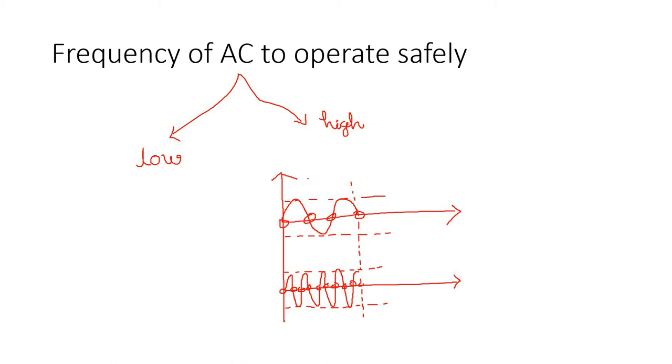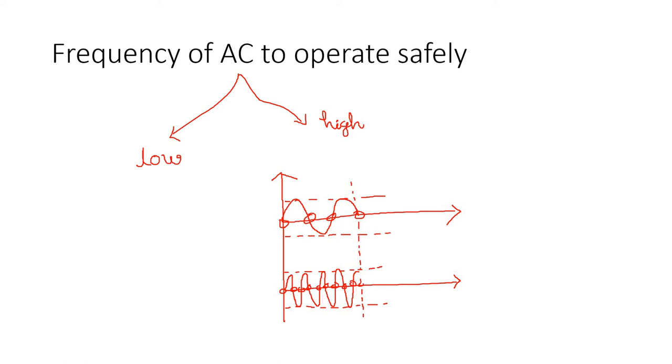And one more thing - you may be curious about what kind of diseases can be detected. So you can easily understand one is this one. Due to smoking or high cholesterol, suppose this is your original blood vessel inside view. Now due to smoking or high cholesterol, what happens? A thick layer of fat just accumulates inside the layer of blood vessels. So as a result, the amount of the volume of blood flow through the vessels will basically decrease. So we can get an idea about this problem or this disease also.